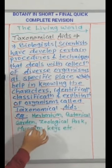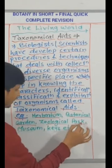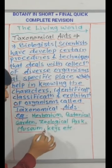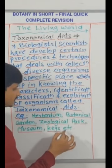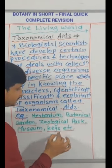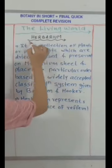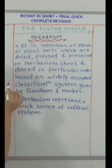Examples of taxonomical aids include: herbarium, botanical garden, zoological park, museum, keys, etc.